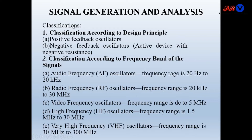Classification of oscillators according to design principle: we may have positive feedback oscillators or negative feedback oscillators such as active devices with negative resistance — an example is the Gunn diode which produces microwave frequencies. Classification according to frequency band: audio frequency oscillator (20 Hz to 20 kHz), radio frequency oscillator (20 kHz to 30 MHz), video frequency oscillator (DC to 5 MHz), high frequency (1.5 MHz to 30 MHz), and very high frequency (30 MHz to 300 MHz).